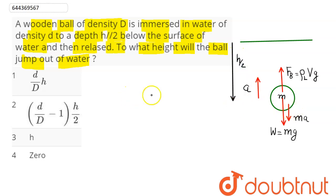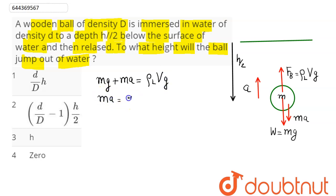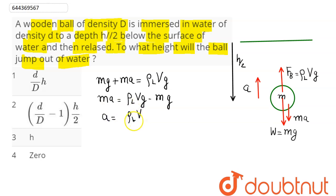Balancing the forces, we have: Mg + Ma = ρ_L × V × g. Hence, Ma = ρ_L × V × g − M × g. Dividing by mass M, acceleration a = (ρ_L × V / M − 1) × g.